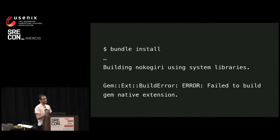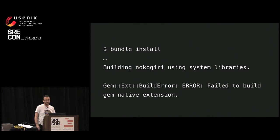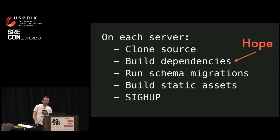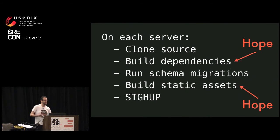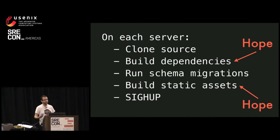One of them is this: you hit bundle install, which is the way to install Ruby dependencies, and you get an error like 'building Nokogiri using system libraries' — boom — it failed because it couldn't compile against the native stuff on your system. This happens all the time, and you really want to deal with it before your app goes anywhere near a real environment, even staging, not even talking production. So we want to avoid doing that as part of our deployment flow. Similarly, building static assets can fail for all the same reasons — a changed dependency version causes the static build to fail. Again, we want to move it out of the deployment flow.